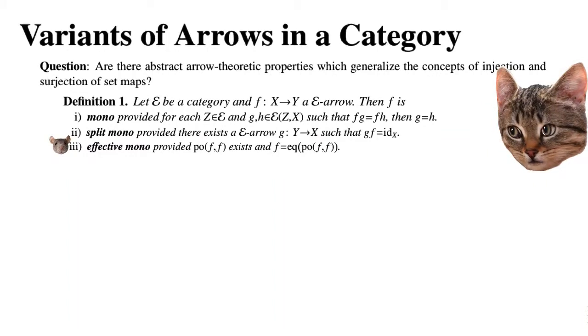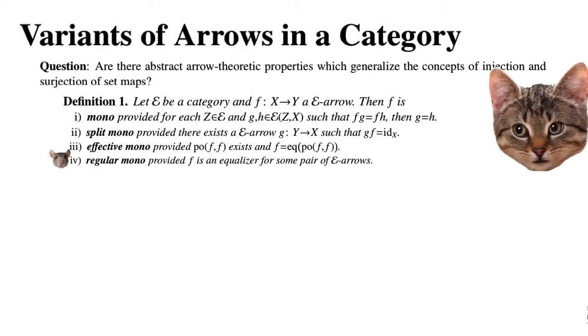We say that F is regular mono provided F is an equalizer for some pair of E-arrows.